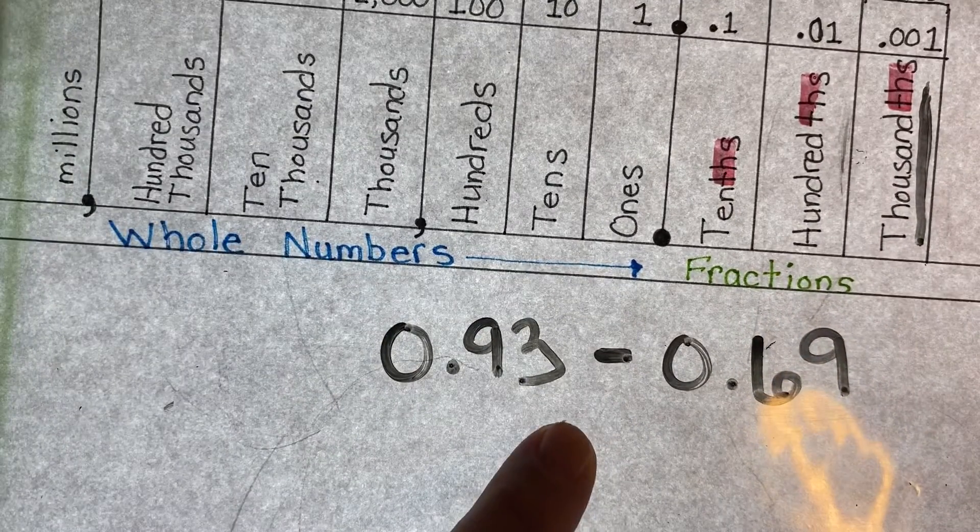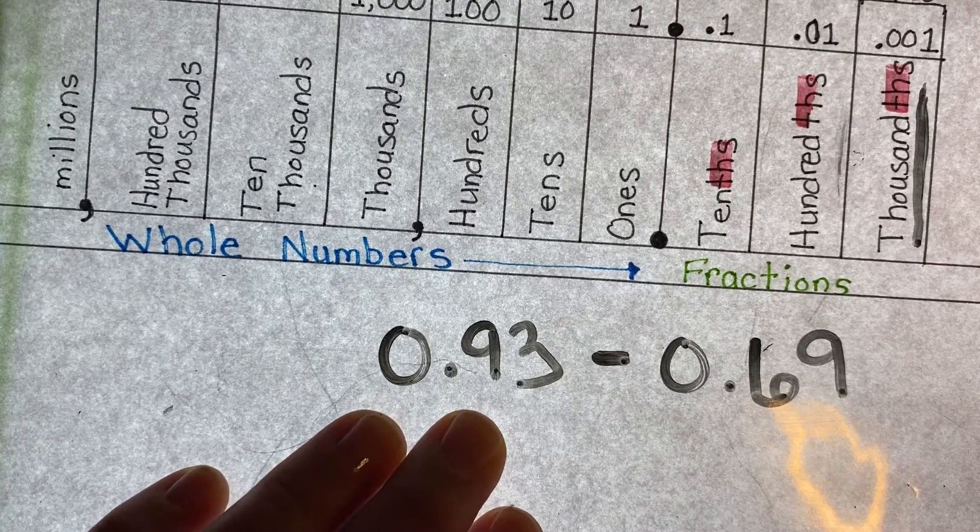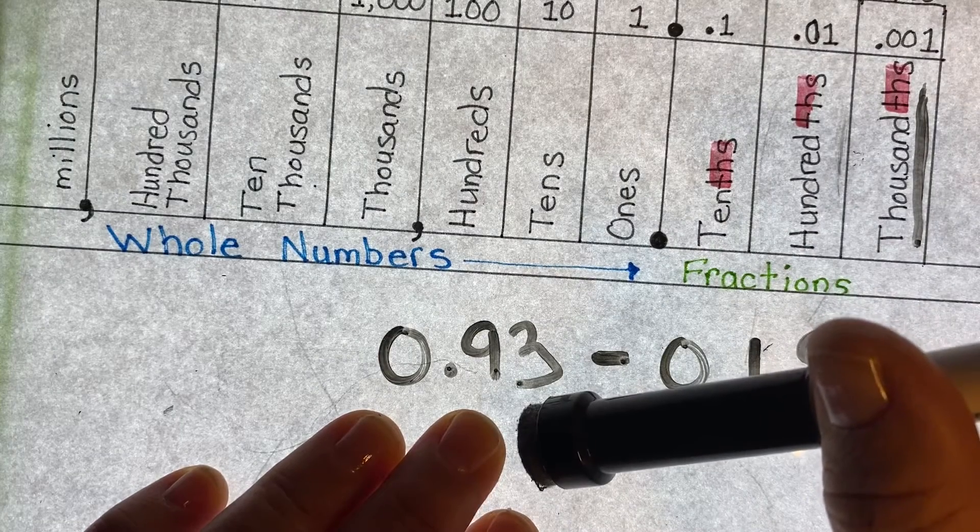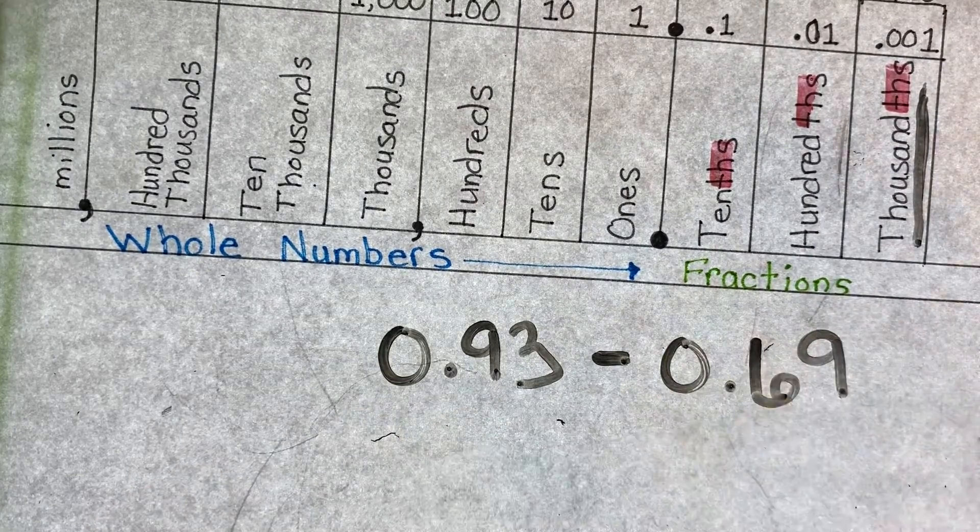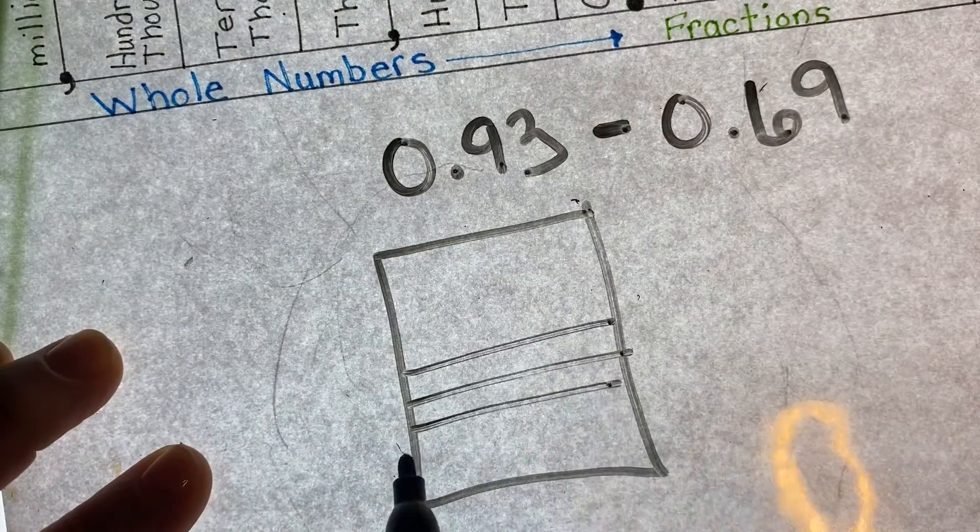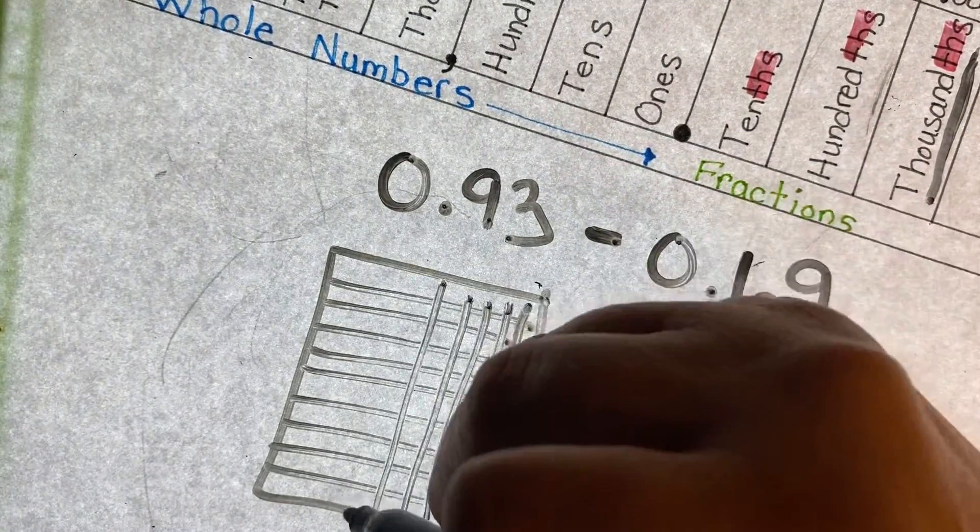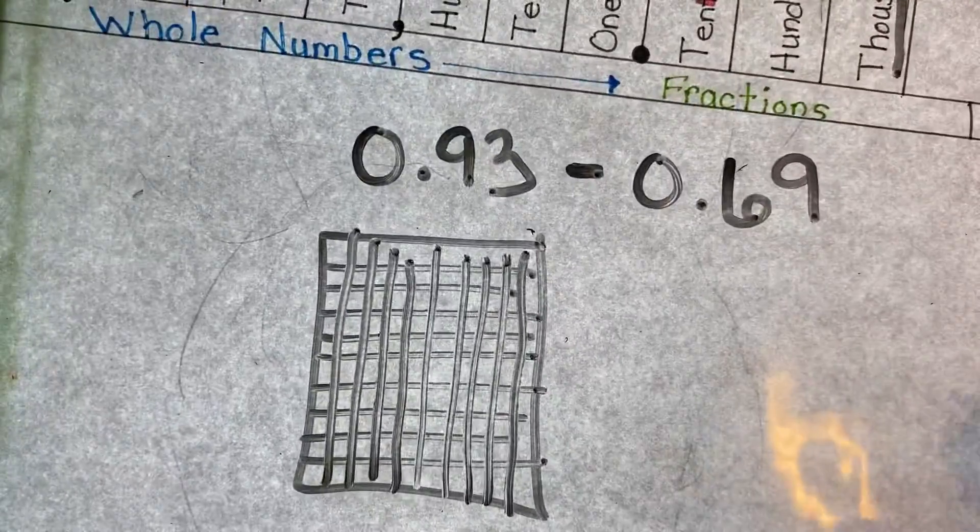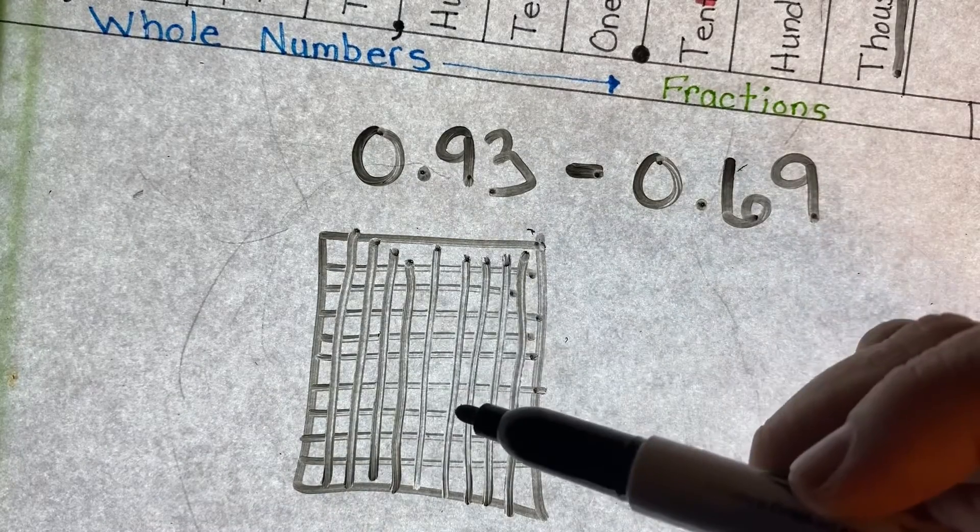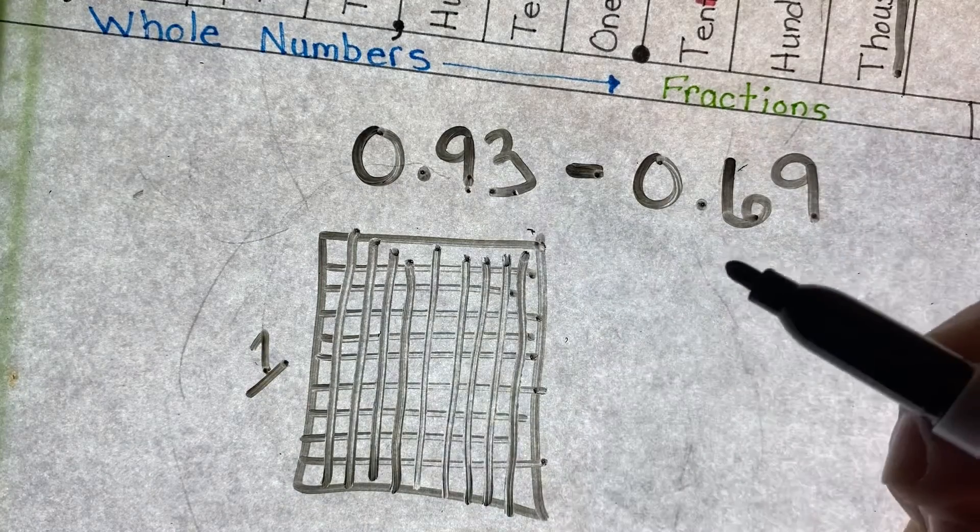So this is all I have. Ninety-three hundredths, which means I have 93 pieces out of one whole. If I had a cube, so if I have a cube of a hundred, out of this whole cube, one whole cube, I have 93 of them.